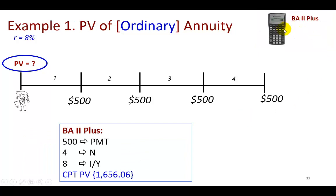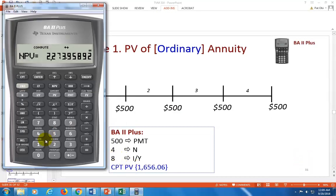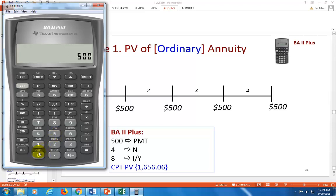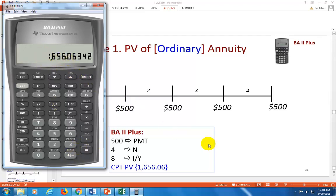We can do this quickly using the BA II Plus. Clear the calculator, then hit Second, Clear TVM and Second, Clear Work. Since we just have annuity payments, enter 500 as the payment, 4 as N, and 8 as I/Y, then compute present value. Remove the negative sign and your result is $1,656.06.